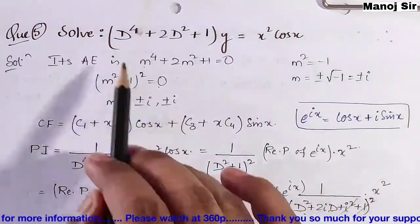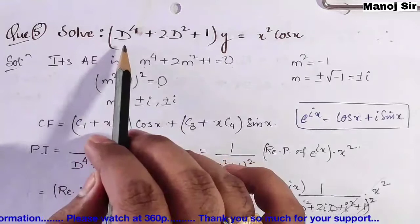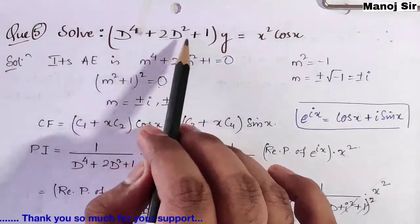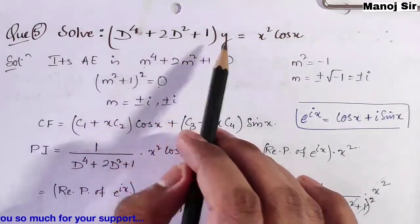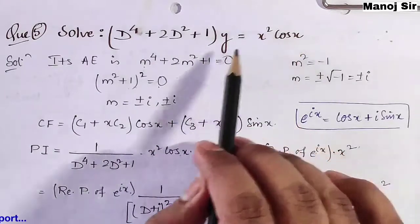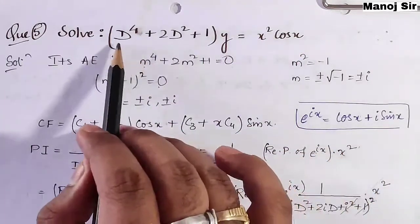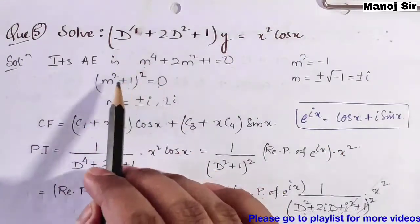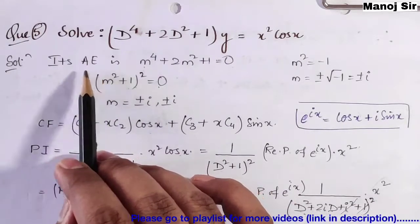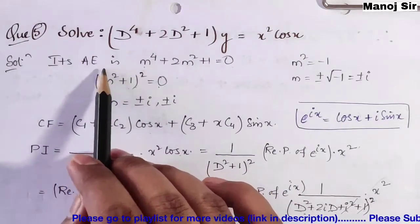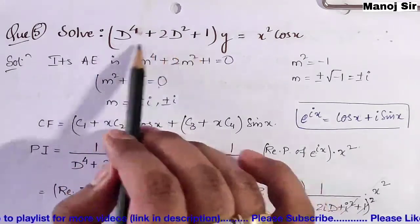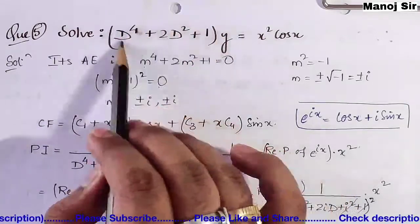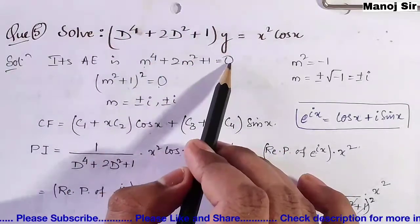So the equation is (D⁴ + 2D² + 1)y = x² cos x. This is what we need to solve. First of all, we need to find the auxiliary equation. To find the auxiliary equation, we equate the coefficient of y — that is, the operator expression — to zero.